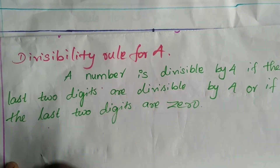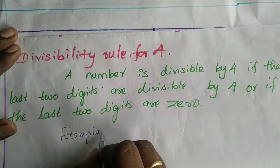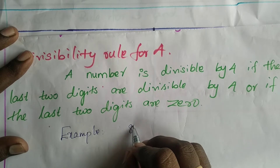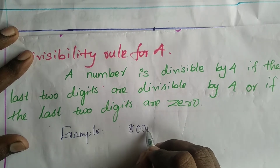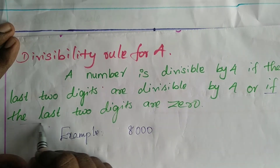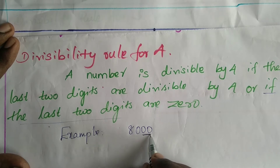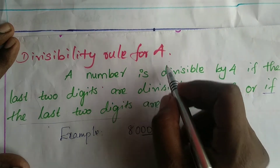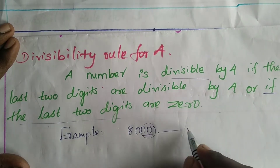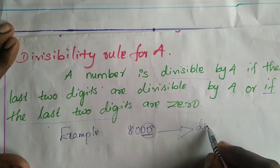For example, let's take the number 8,000. See the second condition: if the last two digits are 0, we can say the number is divisible by 4. So 8,000's last two digits are 0, and we can say it is divisible by 4.